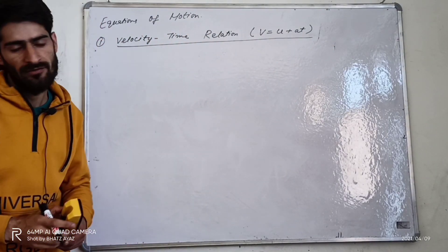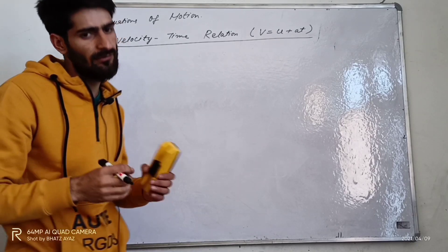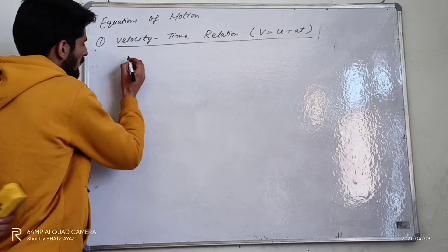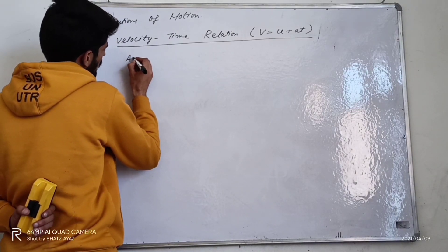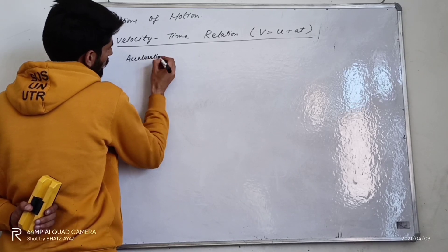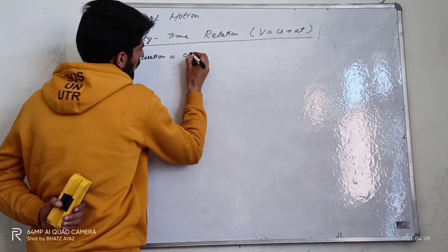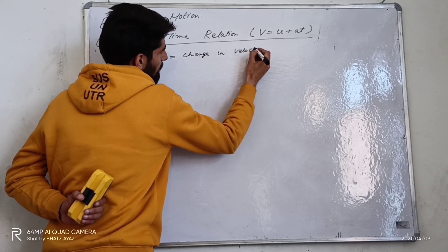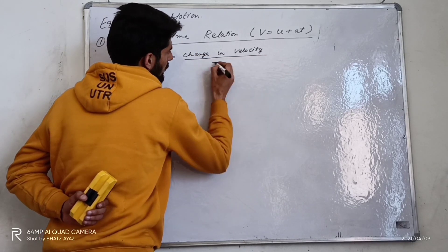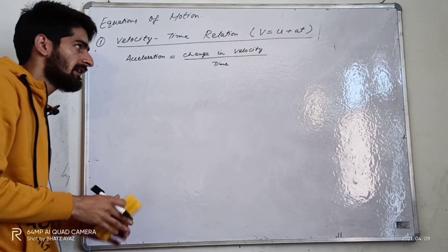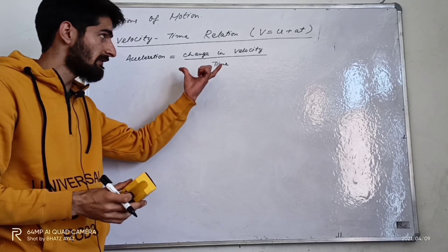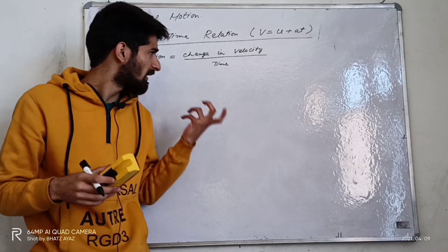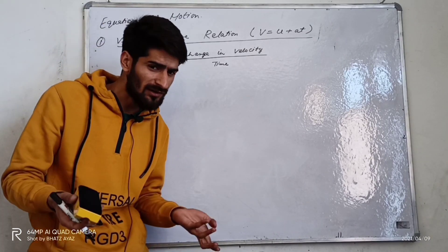We will start with the definition of acceleration. Since we know that acceleration is the change in velocity, I can write here: acceleration is equal to change in velocity divided by time. The change in velocity is the final velocity minus the initial velocity.